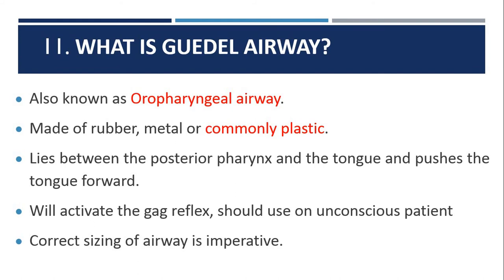The eleventh question: what is a Guedel airway? Also known as an oropharyngeal airway, it is made of rubber, metal, or most commonly plastic. When inserted in the mouth, it lies between the posterior pharynx and the tongue, pushing the tongue forward. It activates the gag reflex and should only be used on unconscious patients. Correct sizing is important. It can also be used in patients who tend to bite the suction catheter, allowing catheter insertion through its opening.